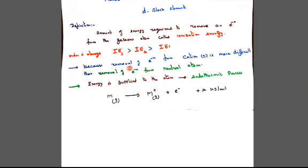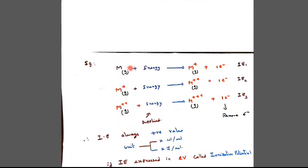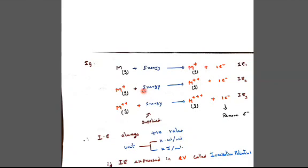Based on this, you have many questions in exams. The neutral gaseous atom M requires energy, loses one electron and becomes M⁺ — that is first ionization. Once the cation is formed, it again requires more energy. So 500 kilojoule per mole for first ionization, and 5000 kilojoule per mole for second ionization energy is required.